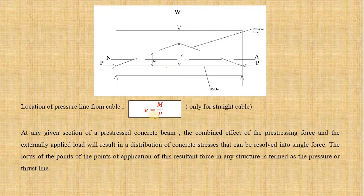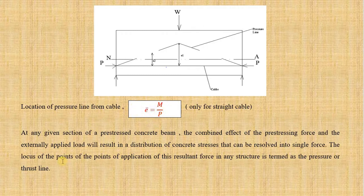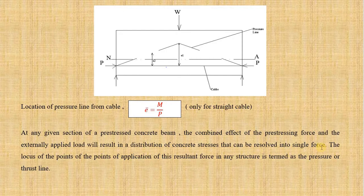The formula for this is e-bar equals M by P, where M stands for moment and P stands for pre-stressing load. This formula is applicable for a straight cable and gives the location of the pressure line from the cable. At any given section of a pre-stressed concrete beam, the combined effect of the pre-stressing force and the externally applied load will result in a distribution of concrete stresses that can be resolved into a single resultant force. The locus of the points of application of this resultant force in any structure is termed as the pressure or thrust line.